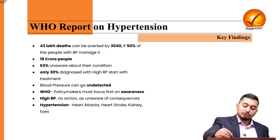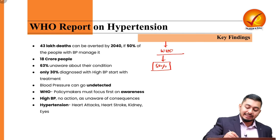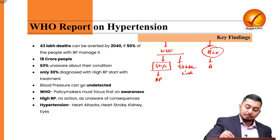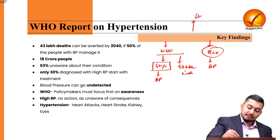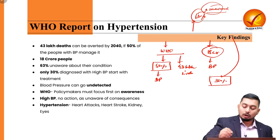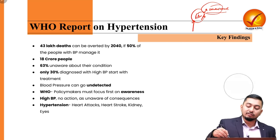Key WHO findings: if 50% of India's people manage their blood pressure, we will save 43 lakh lives. More than 18 crore people in India are affected by high BP. 63% of people are unaware of their condition, and only 30% of those who know about their condition receive any medical treatment. They will only seek treatment when hypertension converts into a secondary issue, such as a cardiovascular issue.